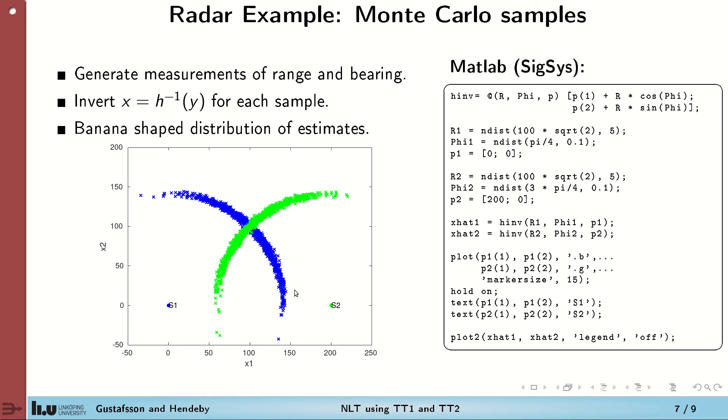The blue dots here come from measurements from this radar here to the left, and the green ones from the radar to the right. The right side of the screen illustrates how this can be done in MATLAB with the Signal and Systems Toolbox.